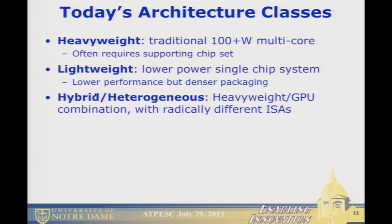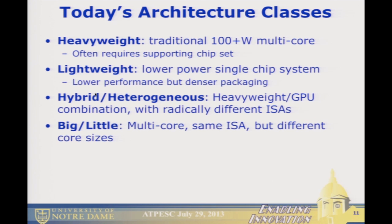After 2008, Roadrunner came out and represented the beginning of another class: hybrid or heterogeneous, where we put in GPUs. Since then, we're beginning to see what I'll call big-little architectures, where unlike heterogeneous machines — which had different ISAs and different microarchitectures — here you still have different microarchitectures for the cores, but you have the same ISA.